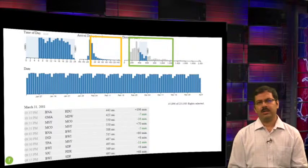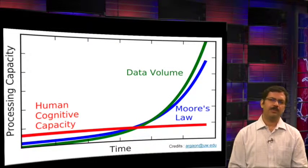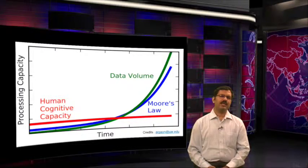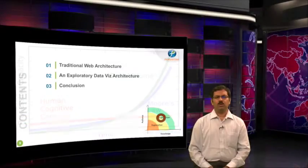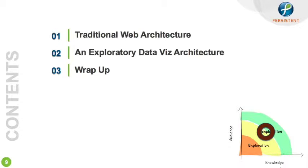As we move deeper into the data era, here's a pretty sobering thought. This is a plot of machine power versus human power, and you can see that as data sizes and computing capacities are increasing exponentially, our human cognitive capacity is essentially flat. The kind of exploratory visualization I talked about and the techniques around that are going to play a very important role in the years to come. With that background, here's the agenda for the rest of the talk: we will evaluate traditional web architectures, suggest an alternative architecture for exploratory visualization, and conclude with takeaways.